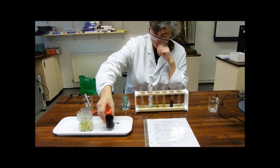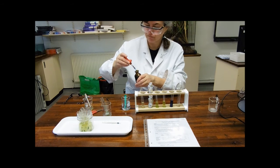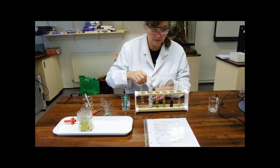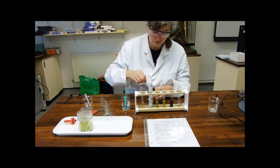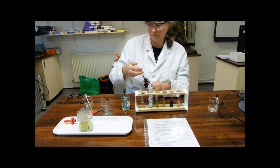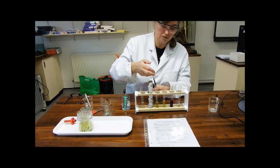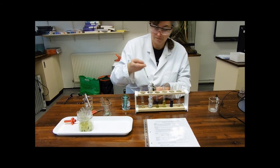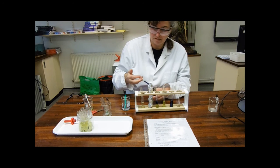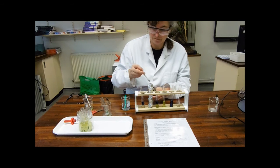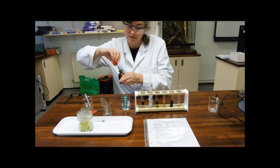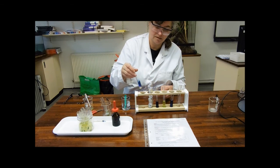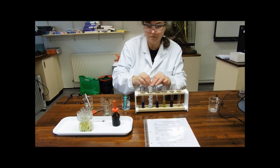And I now need to put my DC-PIP in. So I'm going to put in half a milliliter of DC-PIP into tubes three, four and five. And I'm going to give them a bit of a mix. And then I'm going to have to be really quite quick with what we're doing now.